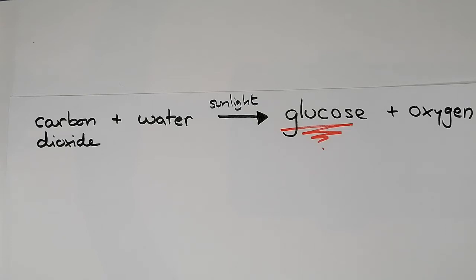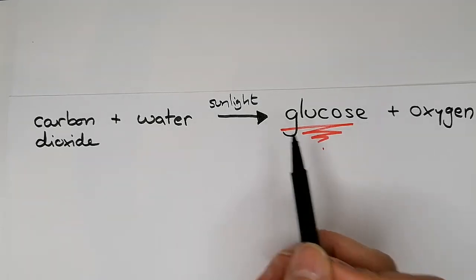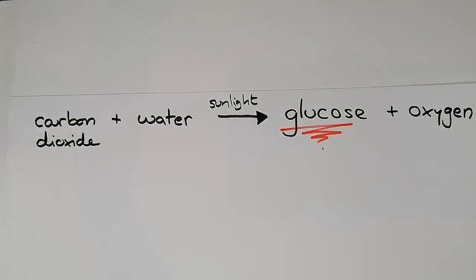You might also see sometimes that they write the word chlorophyll along this arrow as well. Chlorophyll is the green pigment, the bit that makes the plant green, and it acts like a sponge and soaks up the sunlight energy in order to provide the energy for the reaction. If there's no sunlight because it's night time, there isn't going to be any photosynthesis taking place.